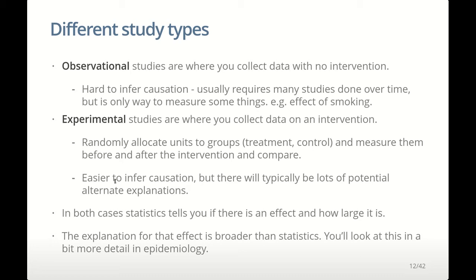Instead we investigate it through observing what happens, which generally takes a lot longer — you need many studies done over time and a bunch of other criteria for causation to be established. For example, you want the lung cancer to happen after the person started smoking. In either case we can do statistics, but the way we interpret the statistics differs. With an experimental study, any difference you see between treatment and control is probably due to your intervention, because random allocation averages out differences between groups at the start.